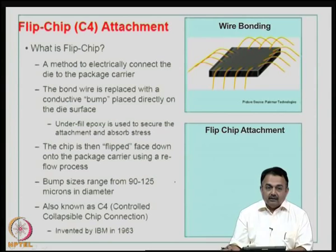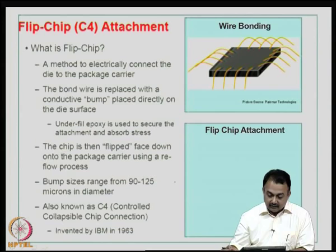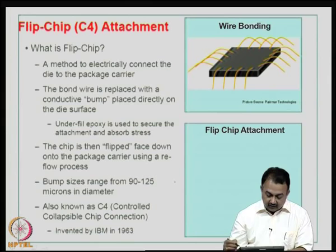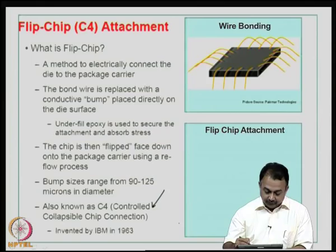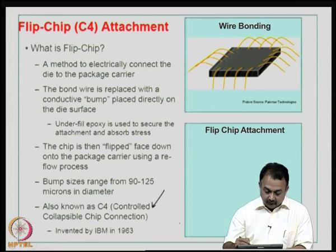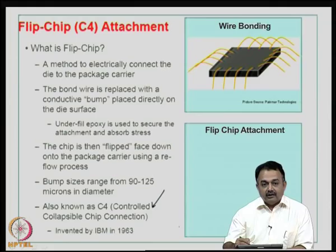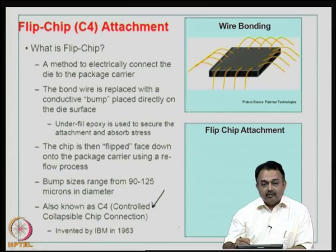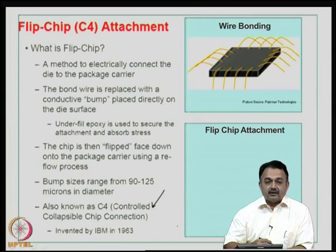Now we come to the third chip connection choice, which is known as the flip chip process. It is also known as C4 process. C4 means controlled collapsible chip connection. Flip chip or C4 is not a new process — it has been established by IBM way back in 1963, but the development of components over the years has brought flip chip to the forefront today as compared to TAB and wire bond.